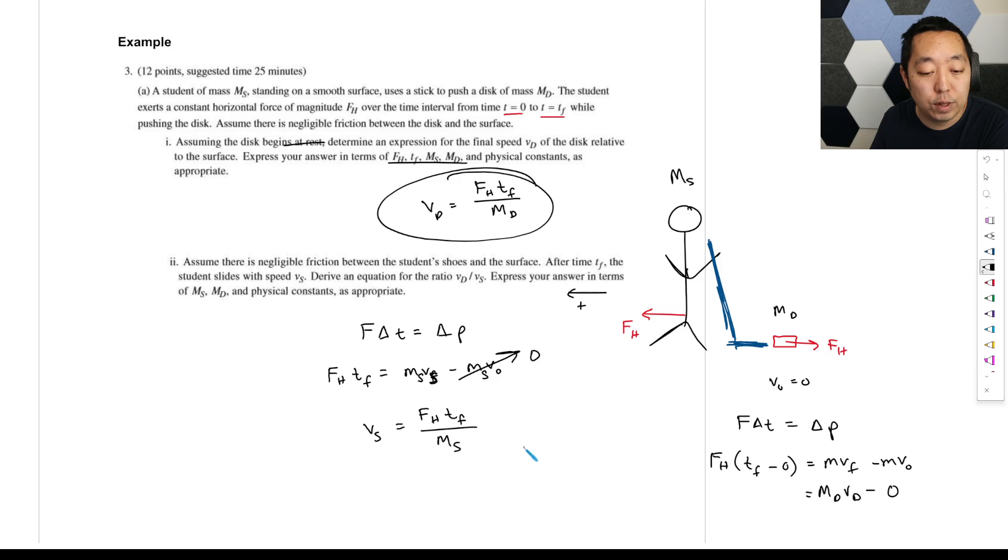We're going to say FH over the time TF, same impulse, right? Because equal and opposite, that's Newton's third law motion. If I push on the disc with FH, it's going to push back on me with the same FH. And now he's going to go to the left here. So we'll just say MVF. And we'll just say left is positive because he's going to go to the left here. MVS, this is final velocity minus MV0. This is the mass of the student. That's the change in momentum. So V0, he starts at rest, I think. Yeah, he's going to start at rest. And so his VS is going to be FH TF over MS. And so now we can do the ratio. What is VS or VD divided by VS? We're just simply going to divide the two. FH TF divided by MD divided by FH TF divided by MS. So those will cancel. And then this will be multiplying by the reciprocal. You'll get MS divided by MD.